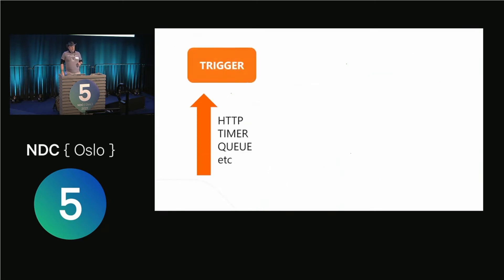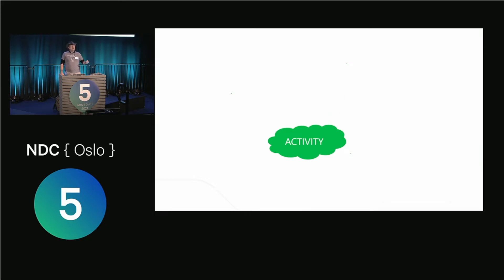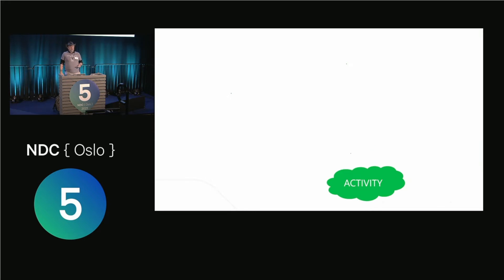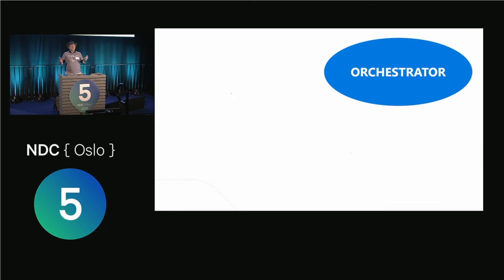The way that durable functions work is that you're going to have a trigger — an Azure Function, which could be an HTTP function or a timer function. In my case, every half an hour I'm running that. This trigger function starts another function called an orchestrator. This special orchestrator function is then going to start an activity function — the one that actually does the work. It's going to wait until the activity completes. When the activity completes, the orchestrator is called again and starts the next activity. And then when that's completed, it goes back to the orchestrator and starts the next activity. After that, the orchestrator checks if everything was done, cleans up, and returns the result.